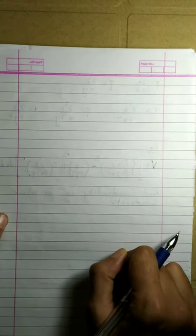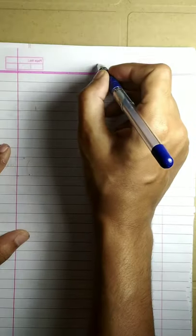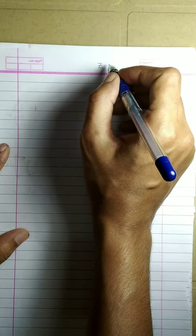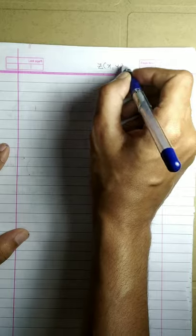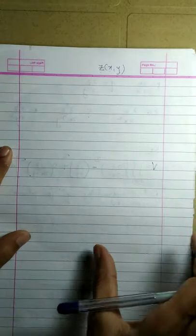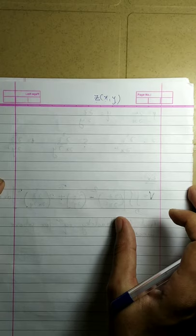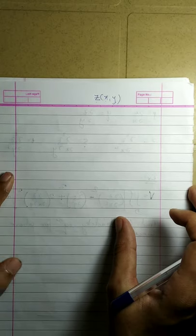Hello everyone. In the previous lecture we derived the Ostrogradsky equation and we also solved examples based on the Ostrogradsky equation. We were dealing with functionals which depend on a function of two variables z(x, y), and in order to obtain the extremal of such functionals we need to solve the Ostrogradsky equation, which is a partial differential equation.